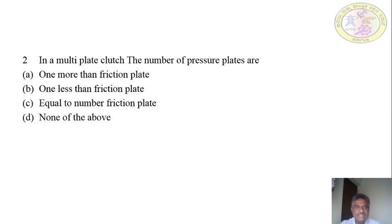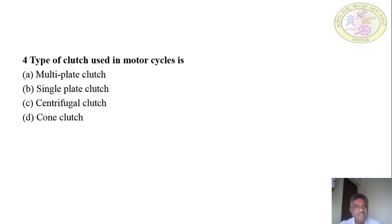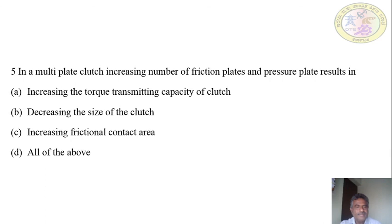Third question: multi-plate clutches are most widely used in two-wheelers. Answer: two-wheelers. Fourth question: the type of clutch used in motorcycles is a multi-plate clutch. Fifth question: in a multi-plate clutch, increasing the number of friction plates and pressure plates will result in increased torque transmitting capacity. Answer: correct.